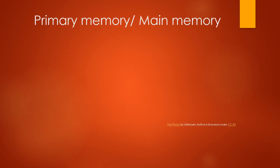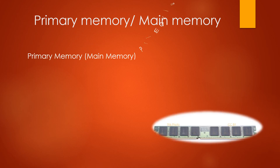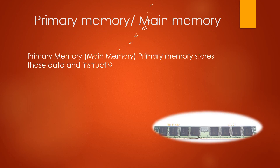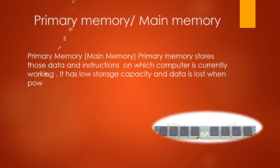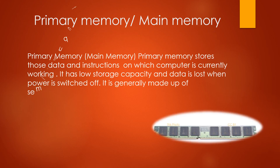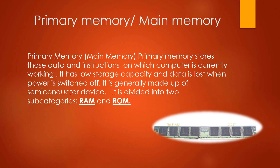Primary memory, or main memory, stores those data and instructions on which the computer is currently working. It has low storage capacity and data is lost when the power is switched off. It is generally made up of semiconductor devices. It is divided into two subcategories: RAM and ROM.